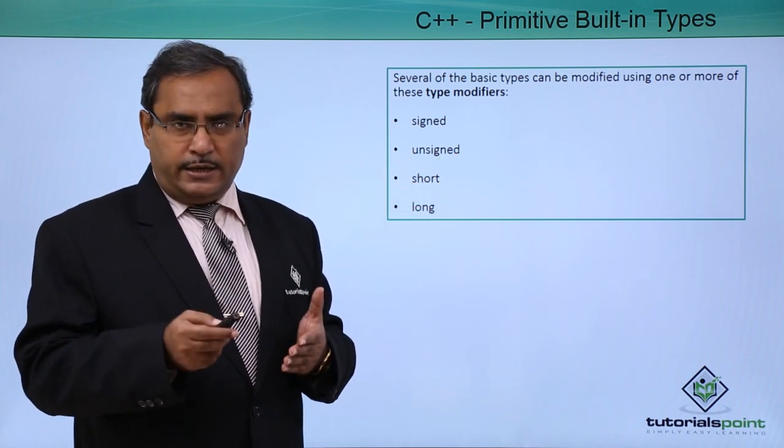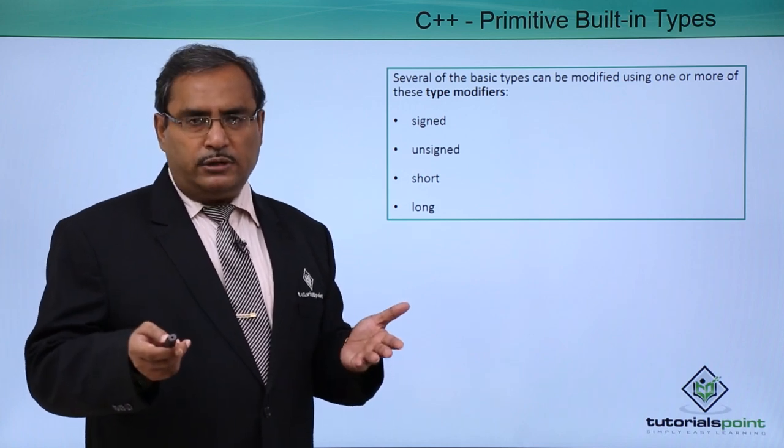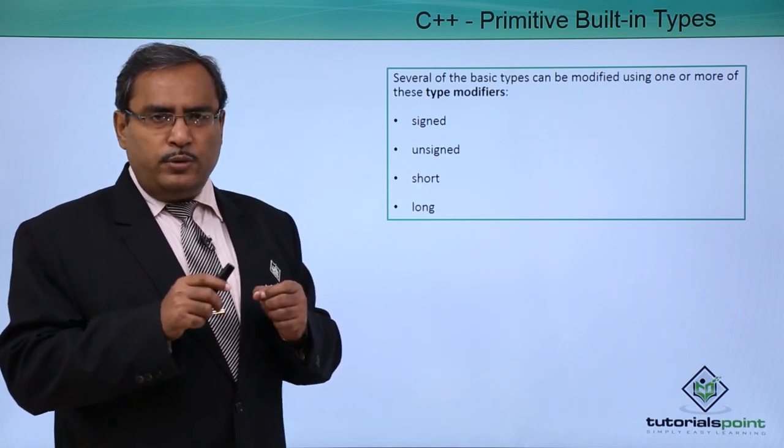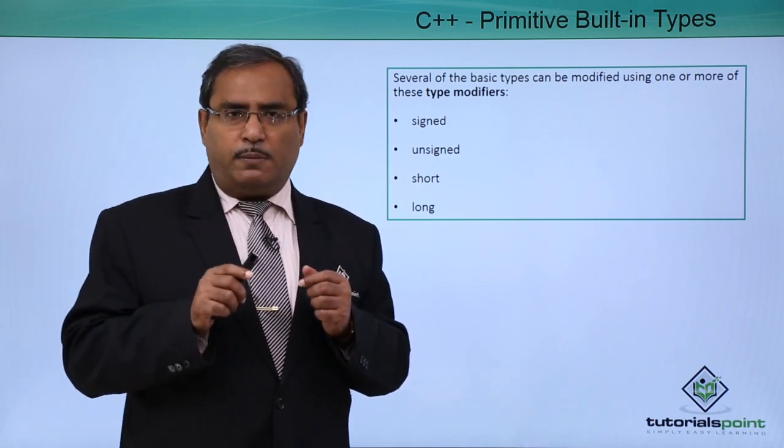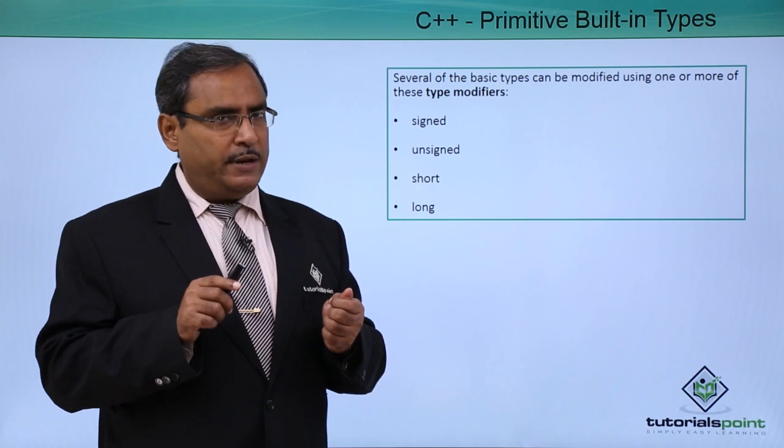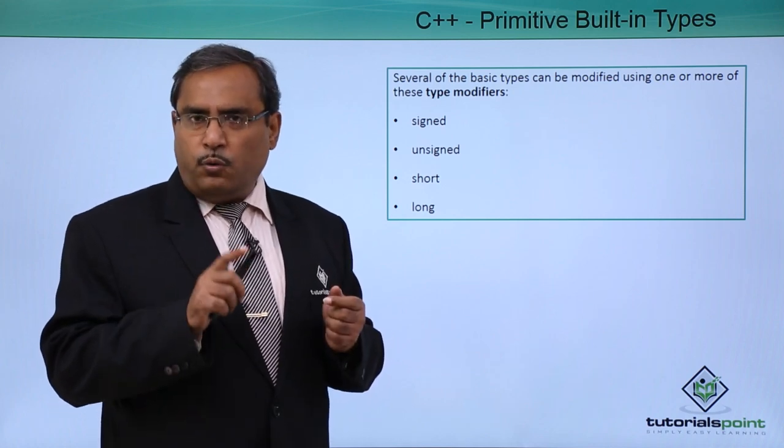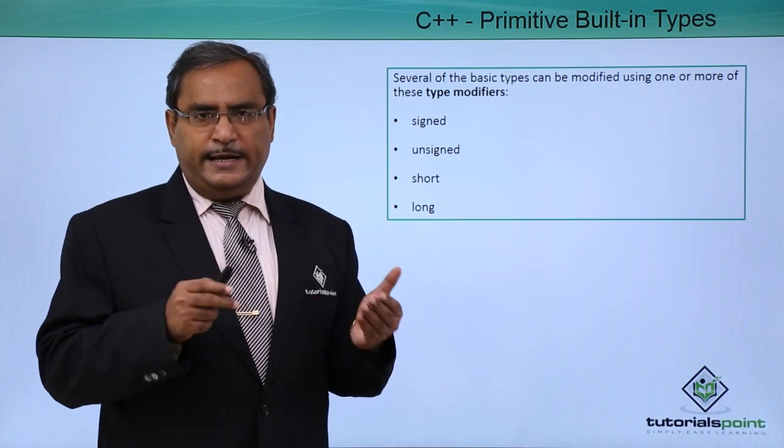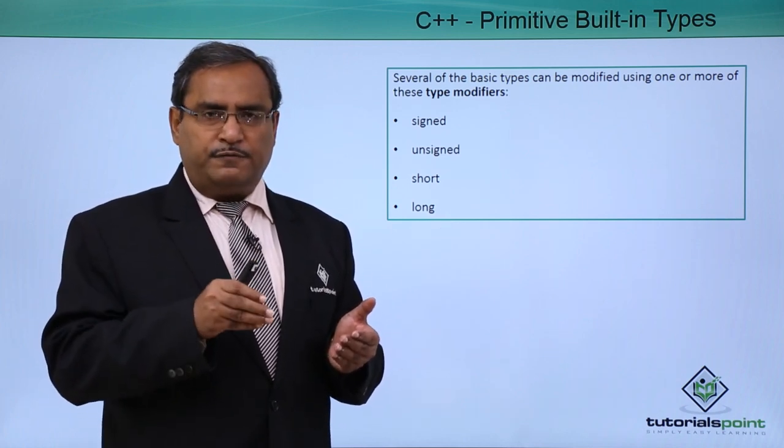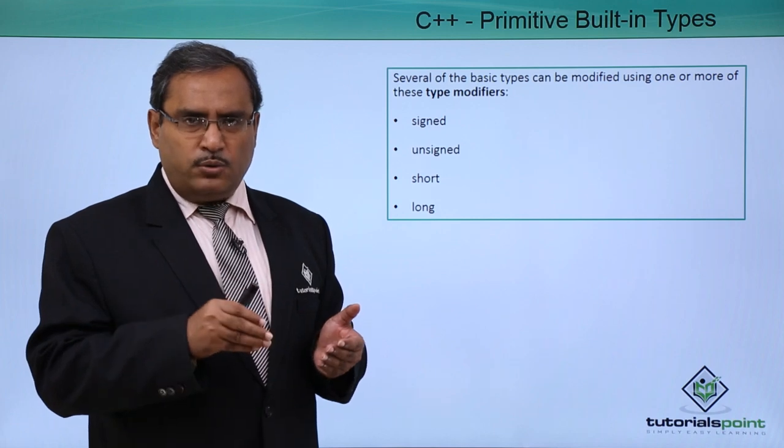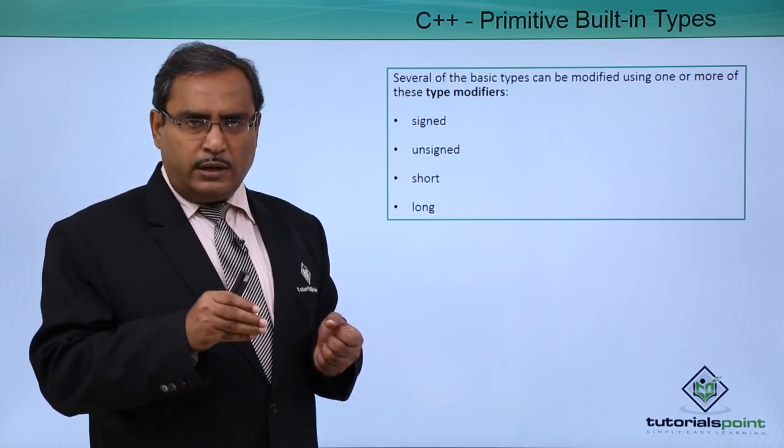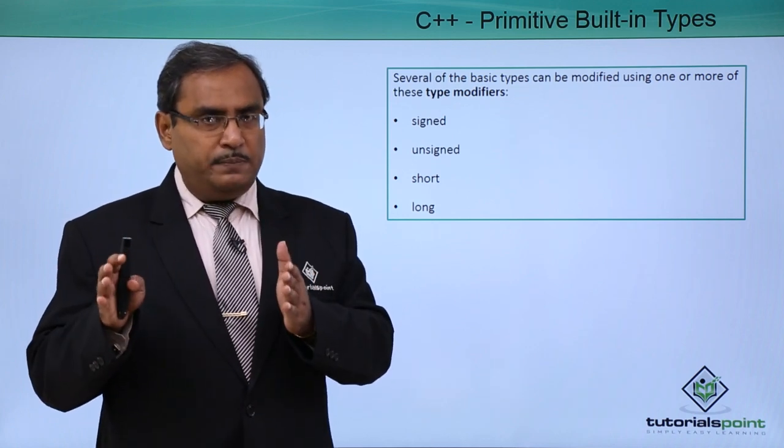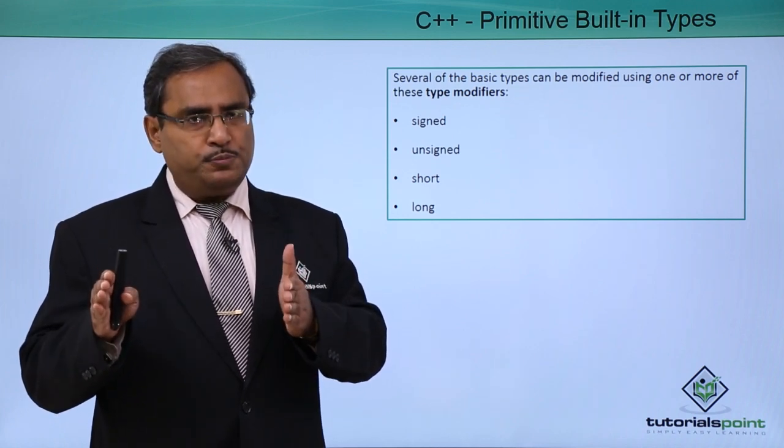In case of signed int, we know that for integer data type we are going to allocate 4 bytes of memory space against the integer data type variable. 4 bytes means 4 into 8, 32 bits. In case of signed int or signed integer, the first bit will be reserved for the sign. If the bit is 0, the number is positive. If the bit is 1, then the number is negative because it is signed integer, and the rest 31 bits will be holding the magnitude part of the number.